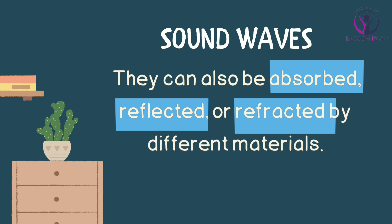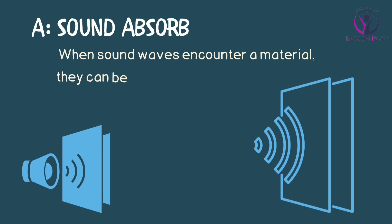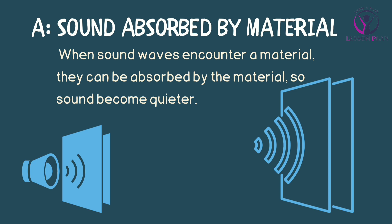But sound waves don't just create vibrations—they can also be absorbed, reflected, or refracted by different materials. When sound waves encounter a material, they can be absorbed by the material, which can cause the sound to become quieter. This is why sound is often muffled when we are in a room with soft, absorbent materials like curtains or carpets.